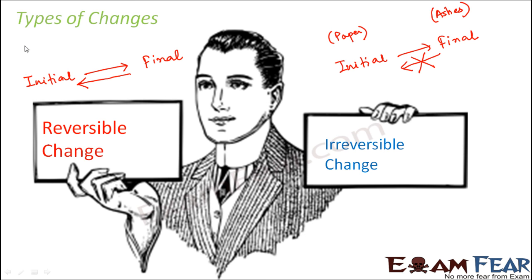Now let me give you an example of reversible change. You take the same piece of paper and fold it to make a paper plane or a paper boat — you make curves and create a paper boat. Can you get back the paper from the paper boat? Yes — if you just unfold it, you get back the same sheet of paper. So getting a paper boat from paper is a reversible change, but burning paper into ashes is irreversible. Now we are going to take many examples from around us and analyze whether each change is reversible or irreversible.